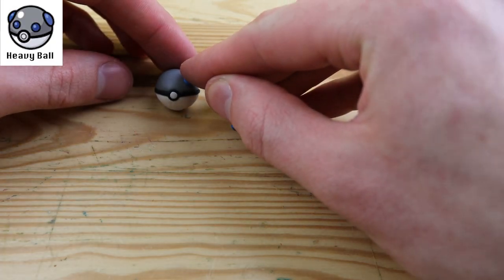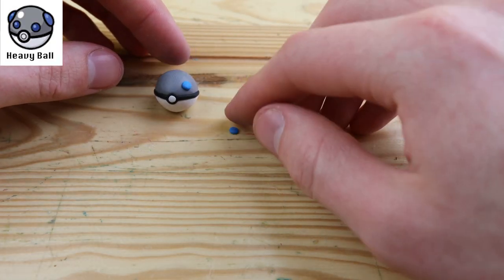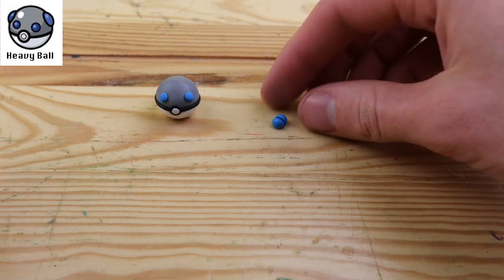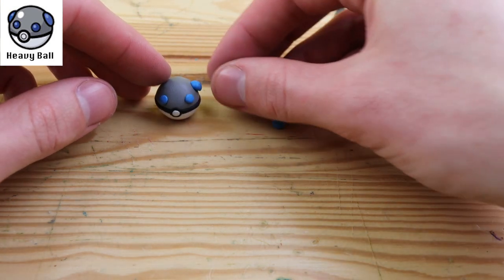This is called the heavy ball, and this one's special because it is more likely to succeed the heavier that the pokemon is, which I think is a pretty cool ability to have on a pokeball.